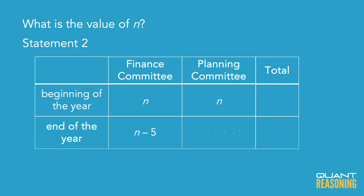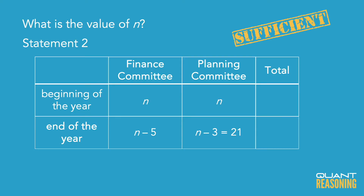We're asked to find essentially the value of n. Starting with Statement 2, which seems easier to evaluate — it gives us the actual number of people in the planning committee at the end of the year. So it's giving us the value of n minus 3. Can we find the value of n if we know n minus 3? Yes, just add 3. So Statement 2 is sufficient on its own, and we should eliminate the answer choices that claim it's not.